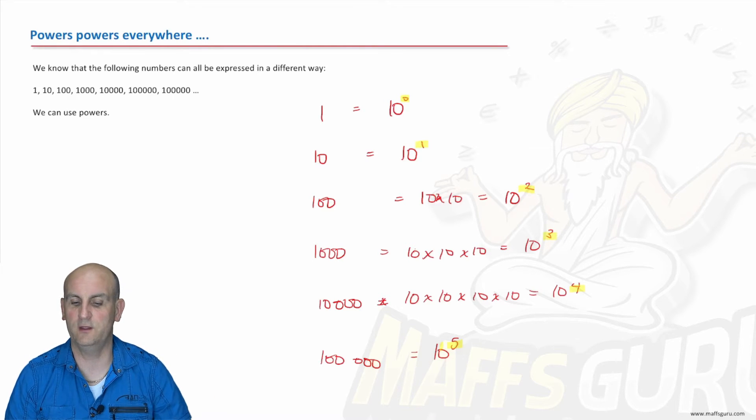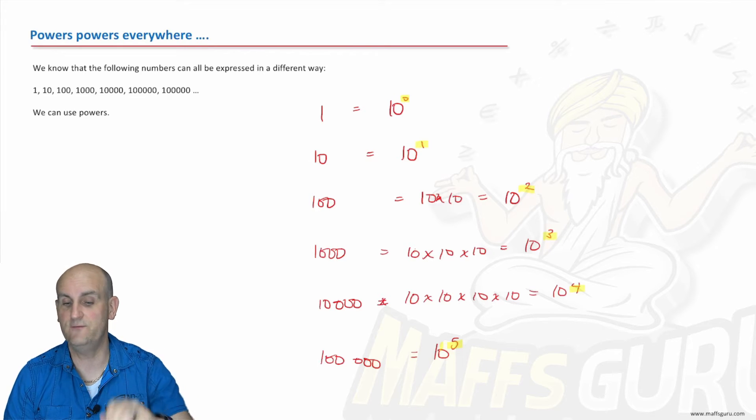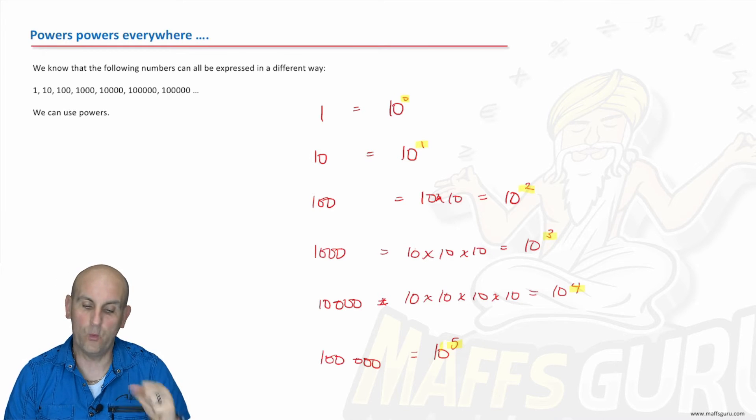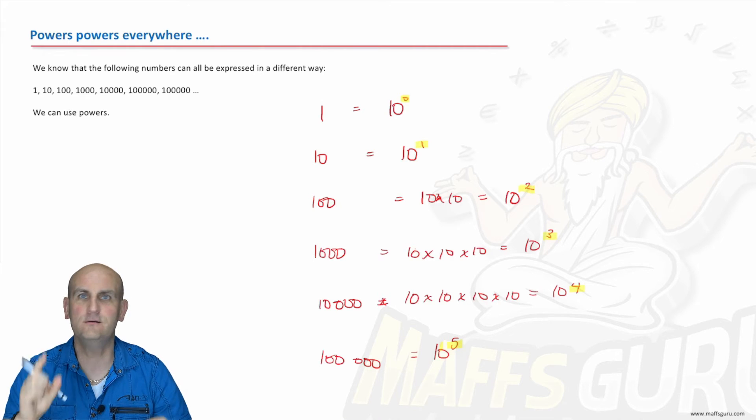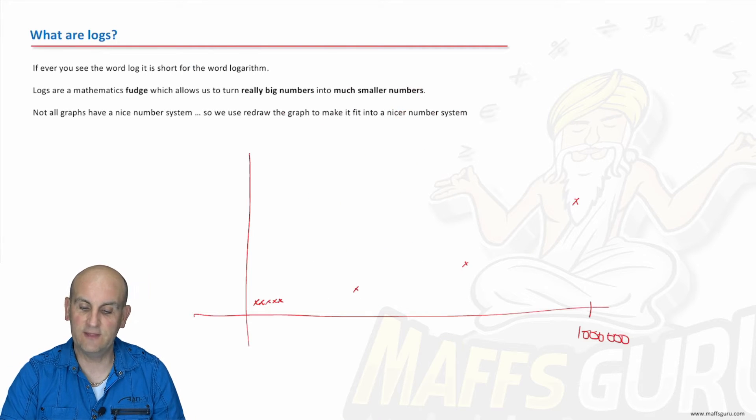There we have it, ladies and gentlemen, that anything to the floaty 0 is 1. That's something else in a different exam or a different question altogether. Now, if we look at the floaty numbers 0, 1, 2, 3, 4, 5, oh my goodness.